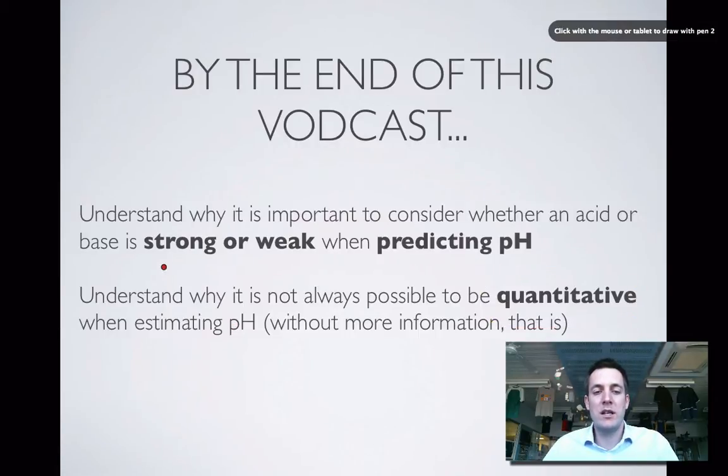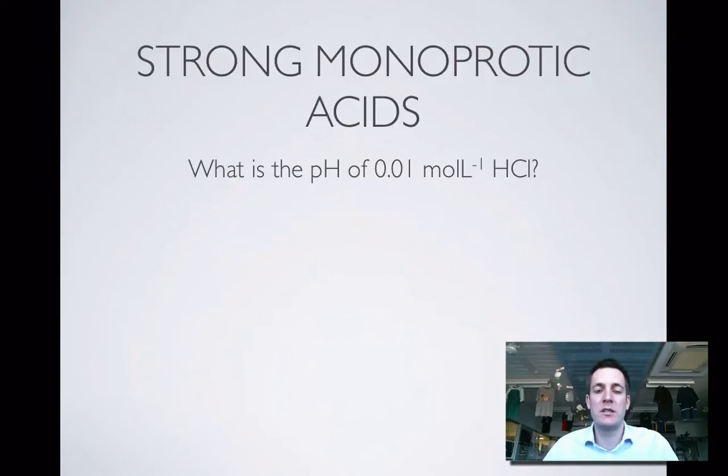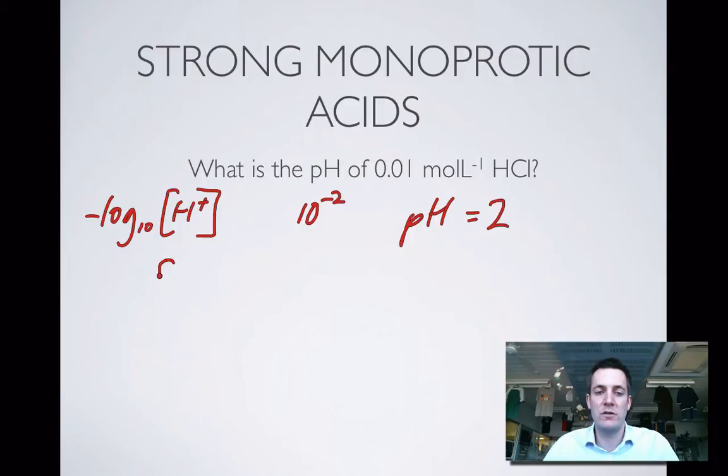Very importantly, we're going to consider why it's important to know whether an acid is strong or weak when we're trying to predict the pH of its solution. We'll start with strong monoprotic acids. What is the pH of 0.01 mol/L HCl? Well, pH is exactly -log₁₀[H⁺]. In year 12 you'd probably just plug this into your calculator because you're using this formula. In year 11, perhaps you're just thinking that I've got two decimal places here, so the pH is 2, because this is a concentration of 10⁻², so -log of that is pH = 2.